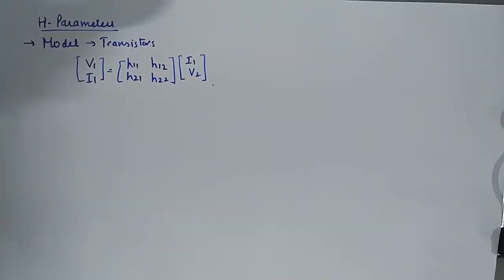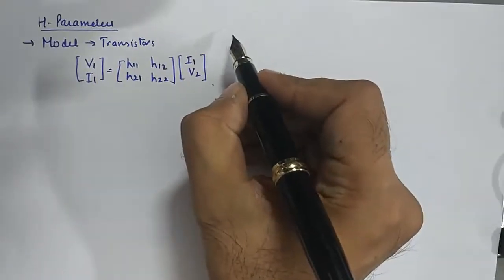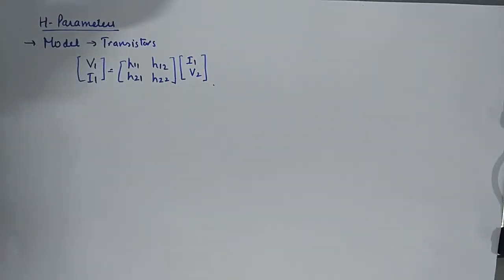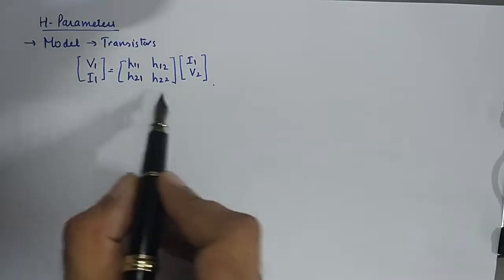This is something that you need to commit to your memory. Unlike the Z parameters which are the representation of V and I in the form of Ohm's law, and unlike Y parameters which also had a representation of simple Ohm's law in its matrix format, the H parameters are represented like this.